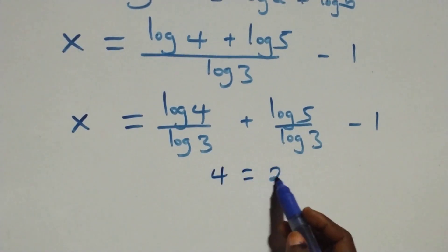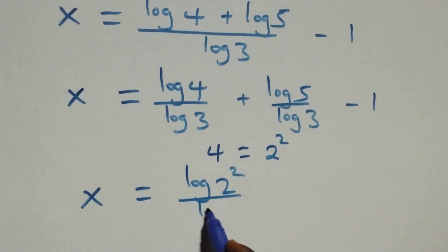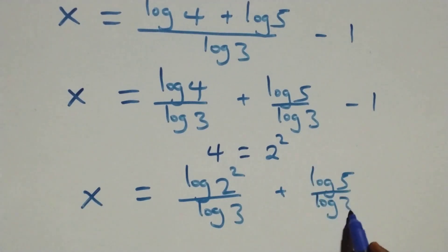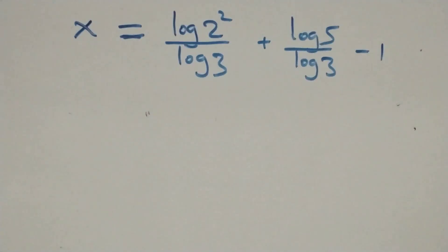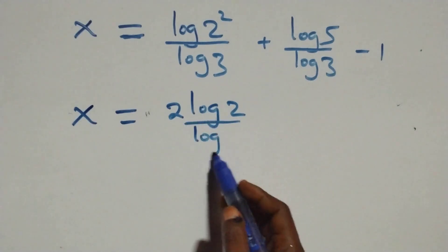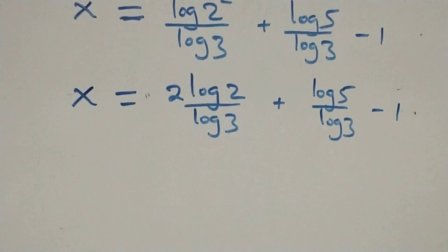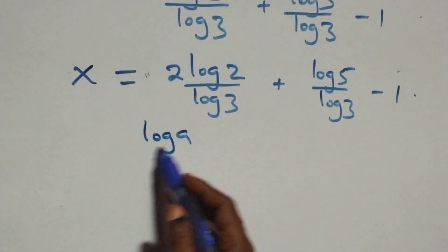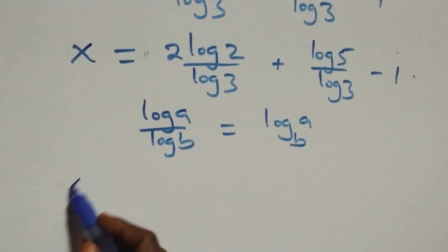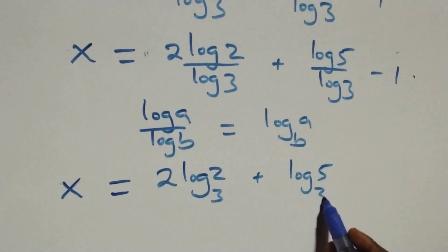4 can be written as 2 times 2, that is 2 squared. So what we have becomes x equals to log 2 squared over log 3 plus log 5 over log 3 minus 1. We apply the change of base formula: log a over log b is the same thing as log a to base b. So x equals to 2 log 2 base 3 plus log 5 base 3 minus 1.